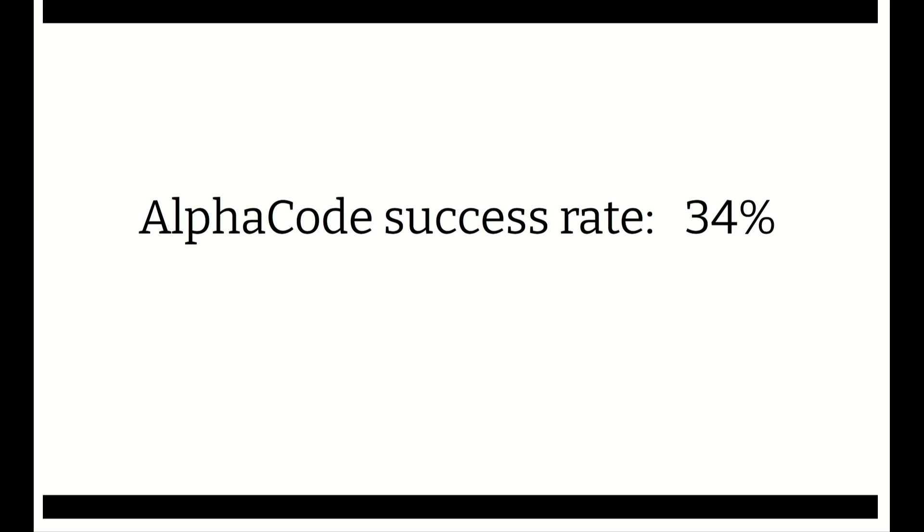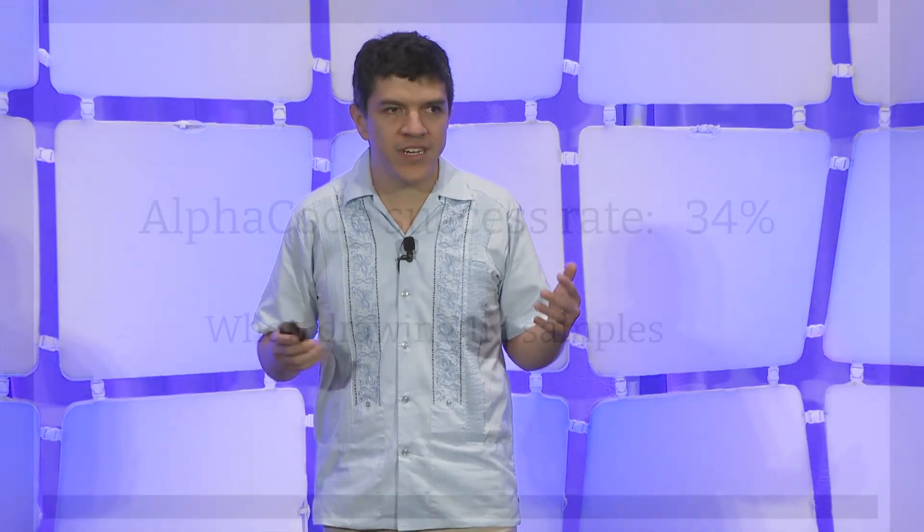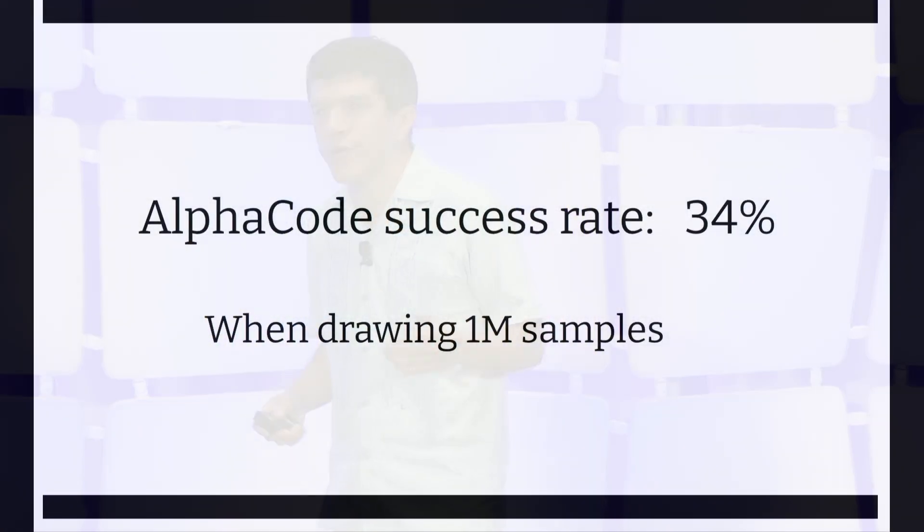So if you have a startup and you think you can get away with having only 34% of your code work, then congratulations. If not, I think you might still need some people to help you with this code. The other thing to note is that in order to get to this 34%, the model was actually generating a million samples. The model was actually producing a million programs, and out of those million-sized pile of garbage, one good solution comes out.